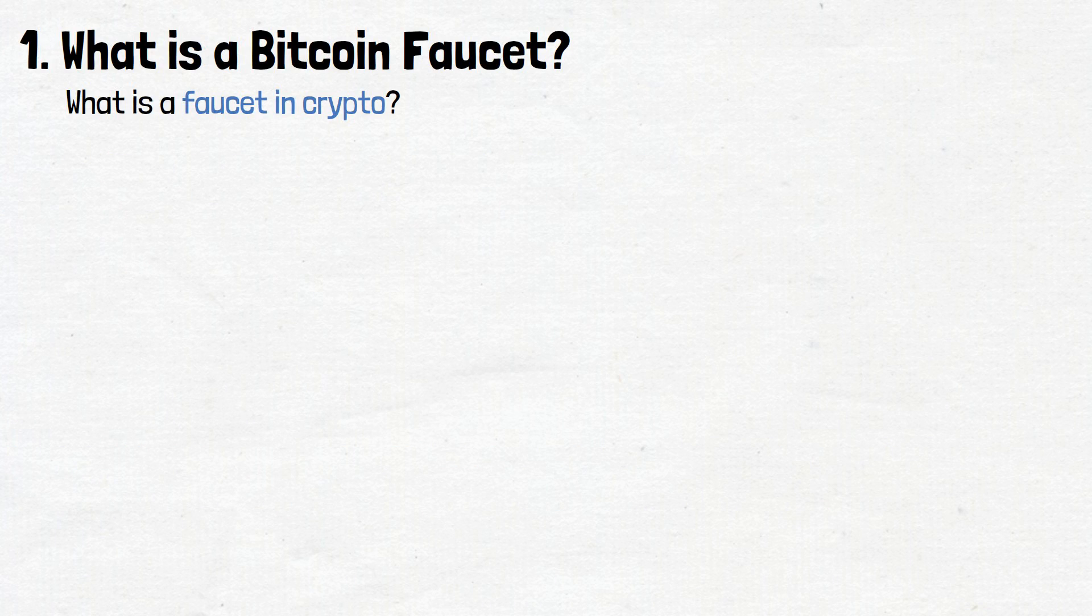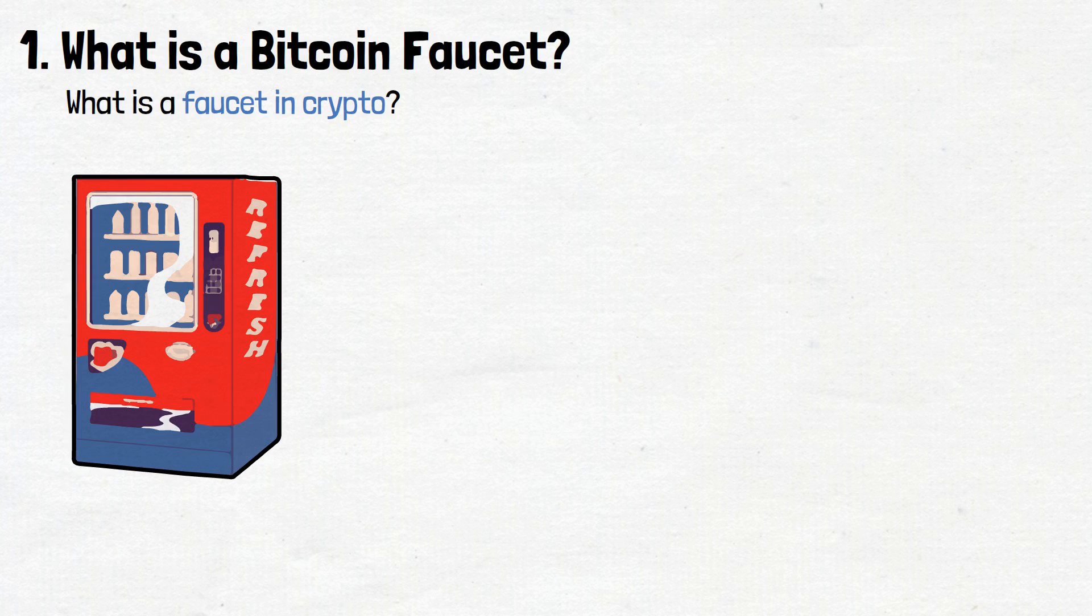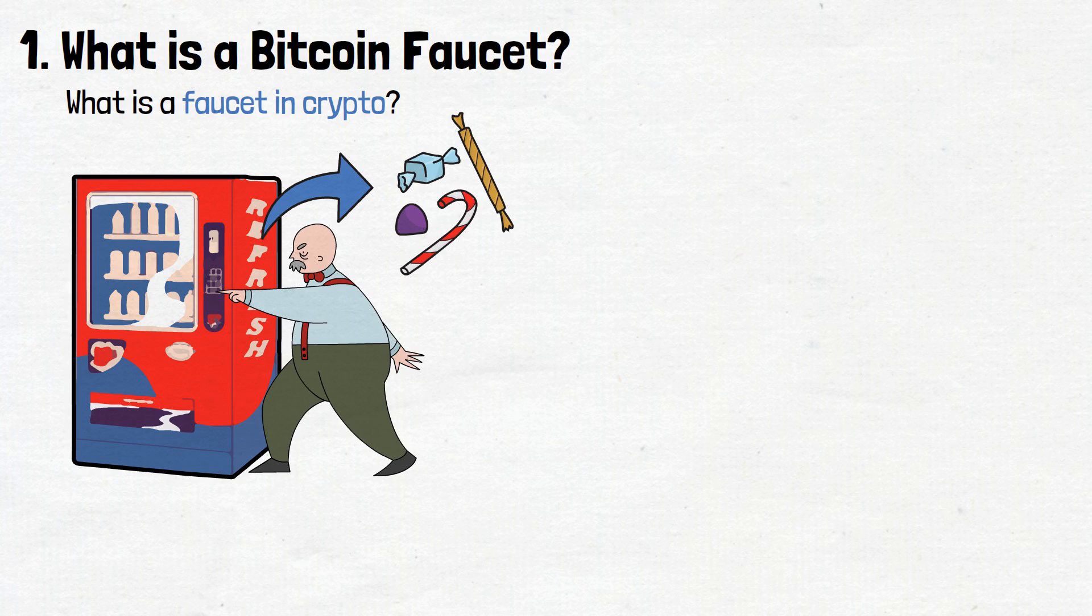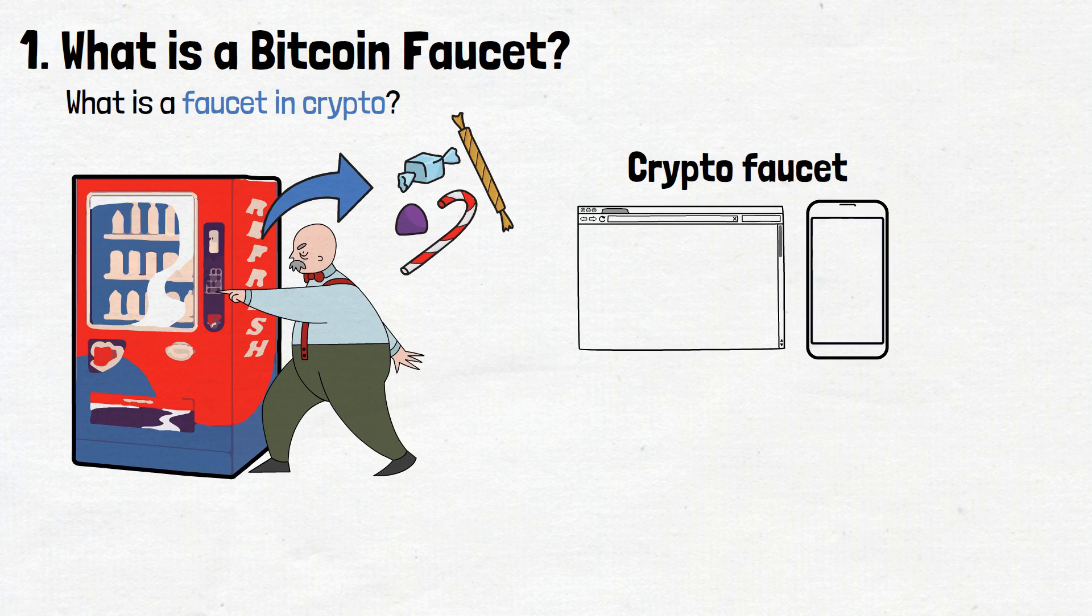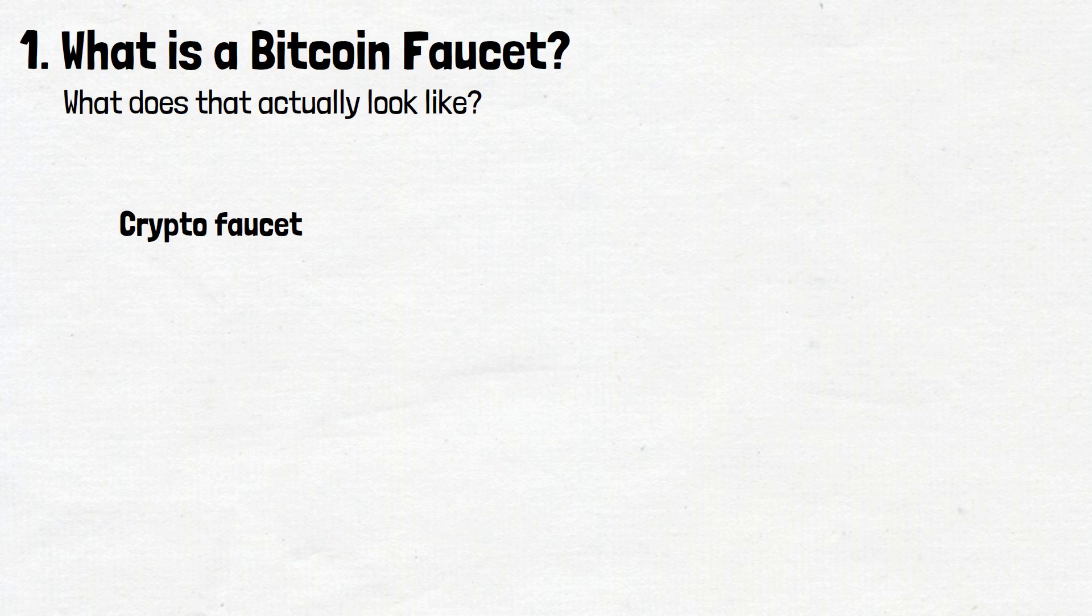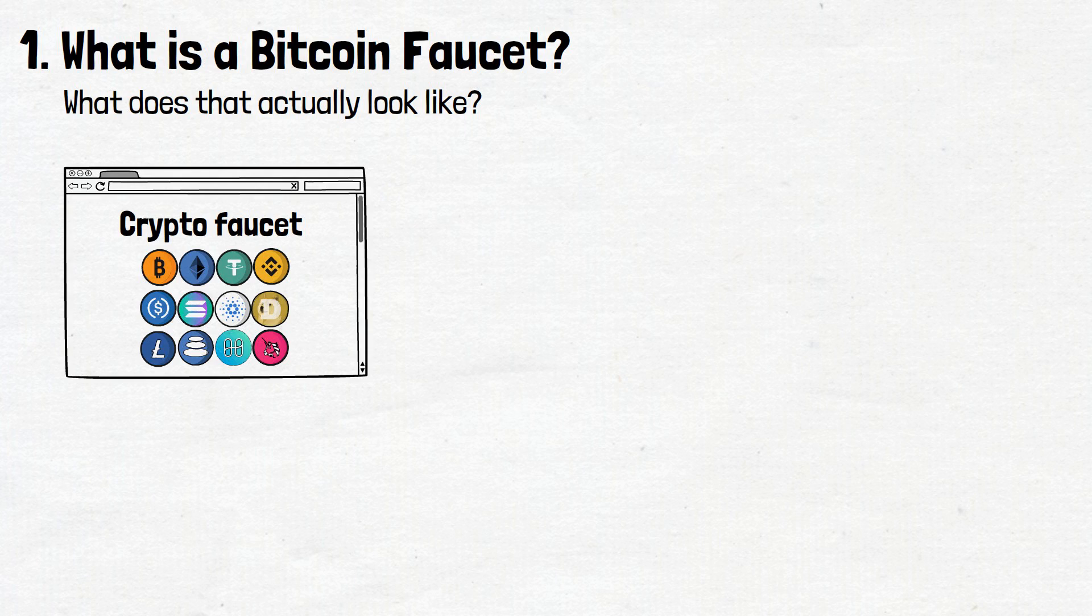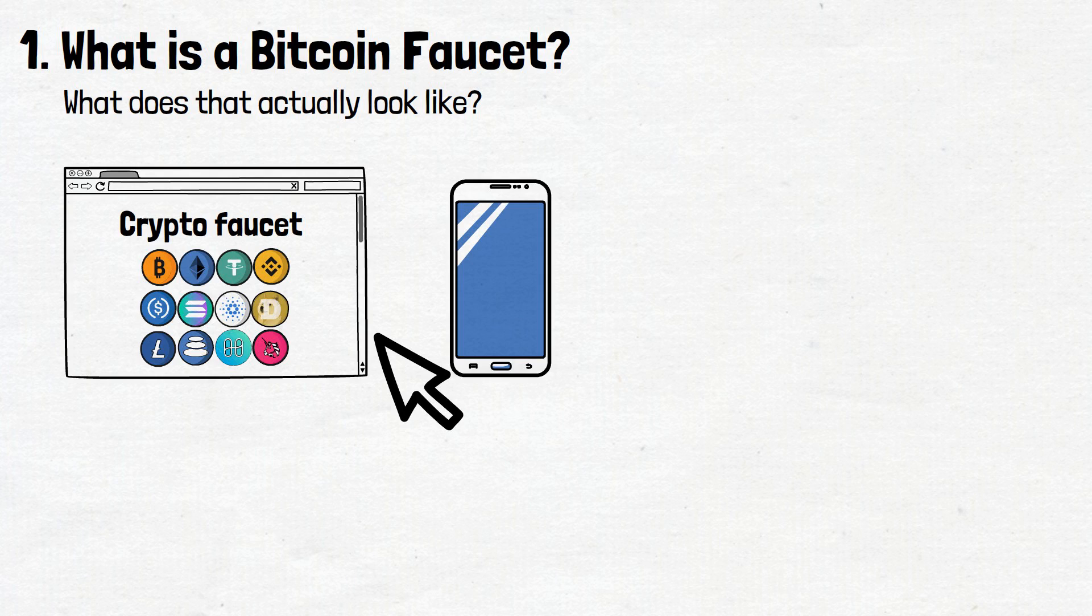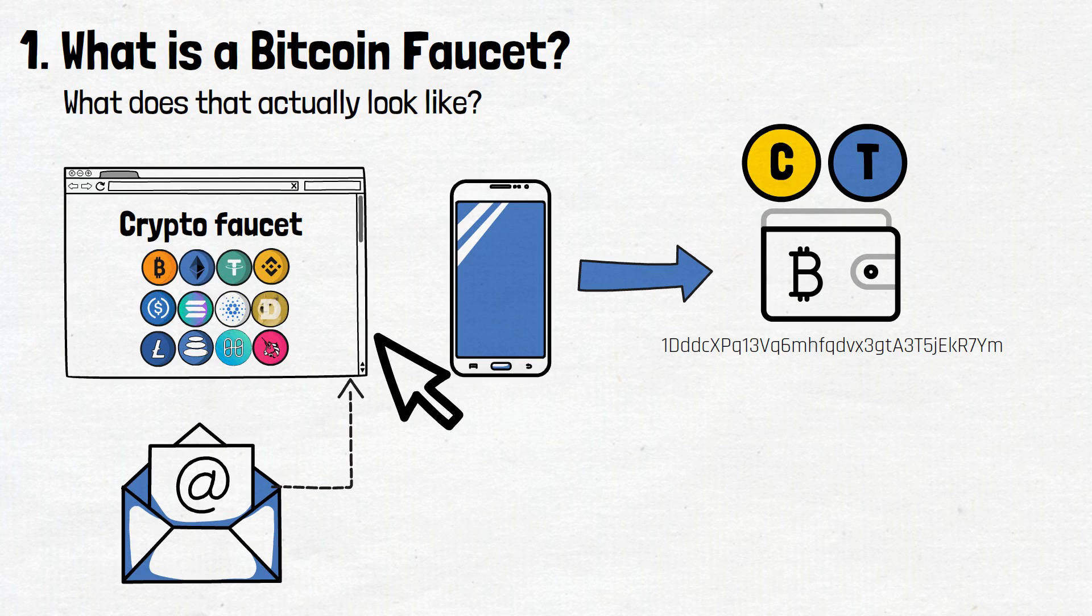To start grasping what is a Bitcoin faucet, let's first answer this question: What is a faucet in crypto in general? Just like that vending machine that gives you a taste of candy each time you press a button, a crypto faucet is like a website or app that gives you small amounts of cryptocurrency when you perform simple tasks online. So, what does that actually look like? Typically, you'll look for a crypto faucet offering a coin or token you desire. You'll enter its website or app, maybe log in with an email, and provide your receiving wallet address for that specific coin or token.